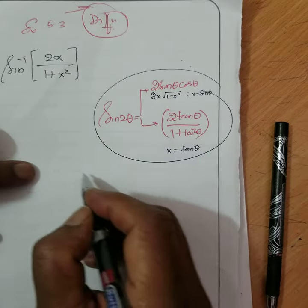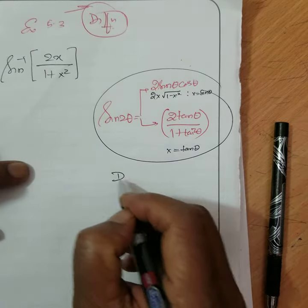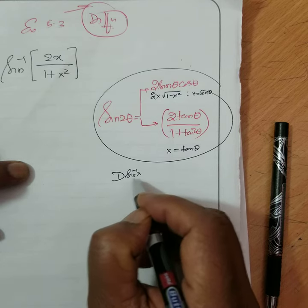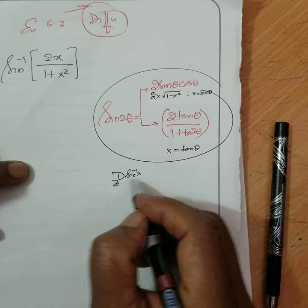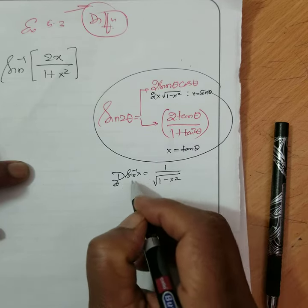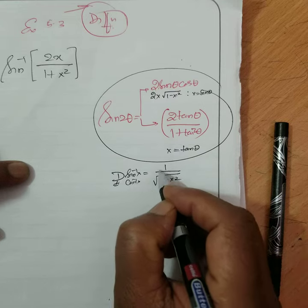Just remember this one. See, there is another thing also: differential coefficient of sin inverse x, d means dy/dx, is equal to 1 over root 1 minus x squared. Cos inverse x is what? Minus.